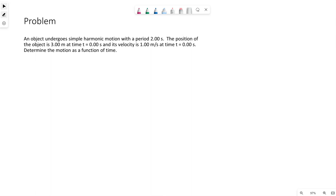We have a sample problem here. An object undergoes simple harmonic motion with a period of two seconds. The position of the object is three meters at time equals zero seconds, and its velocity is one meter per second at time equals zero seconds. Determine the motion as a function of time.